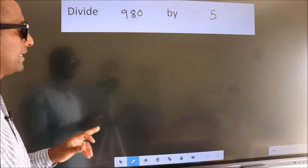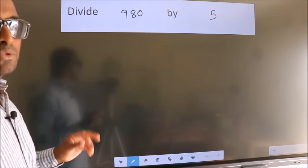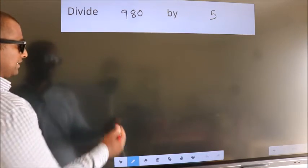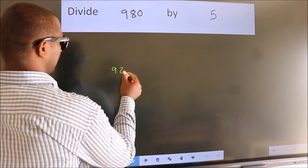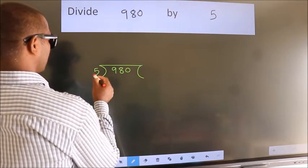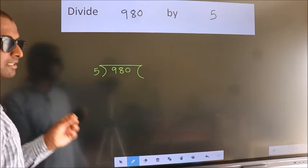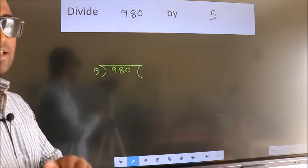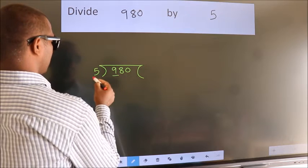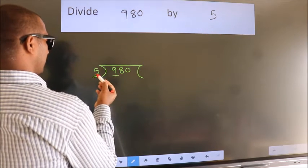Divide 980 by 5. To do this division, we should frame it in this way: 980 here, 5 here. This is your step 1. Next, here we have 9. A number close to 9 in the 5 table is 5 once 5.